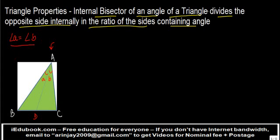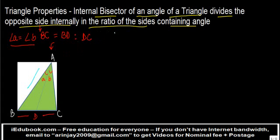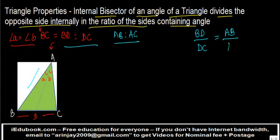The internal bisector of an angle of a triangle divides the opposite side — which is BC over here — into two parts: BD and DC. What the theorem says is that the internal bisector divides the opposite side in the ratio of the sides containing the angle, which are AB and AC. So the ratio of BD to DC should be equal to the ratio of AB to AC, or BD upon DC equals AB upon AC.